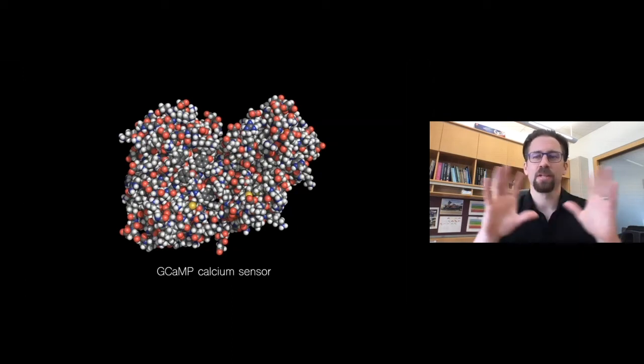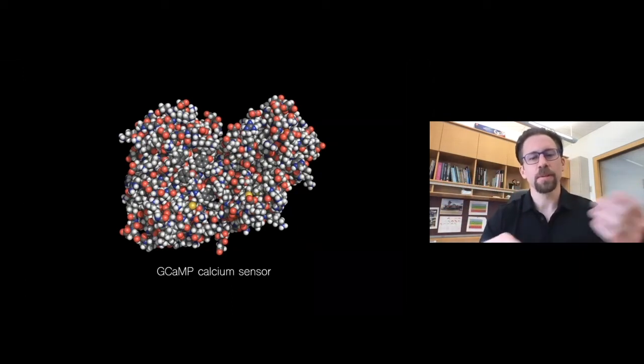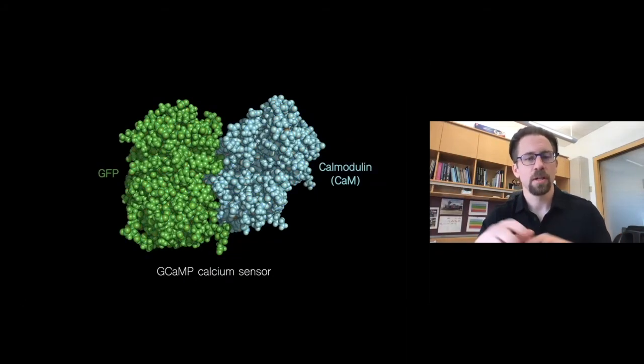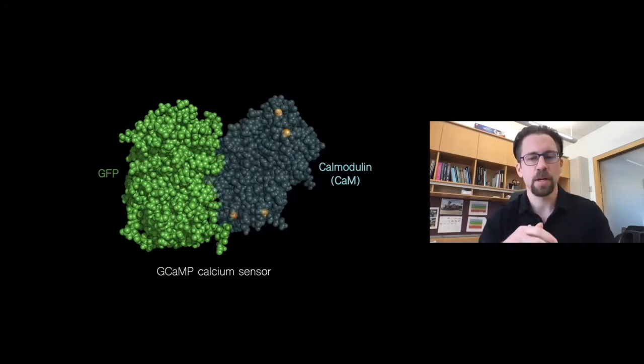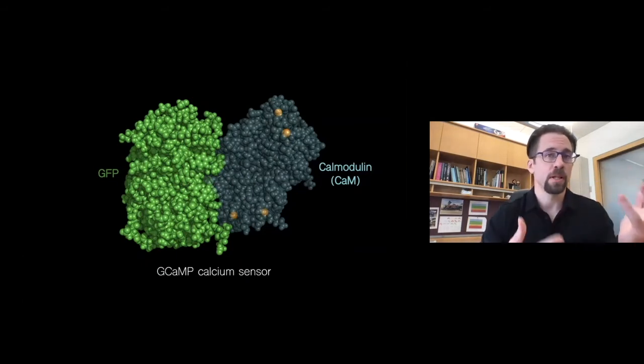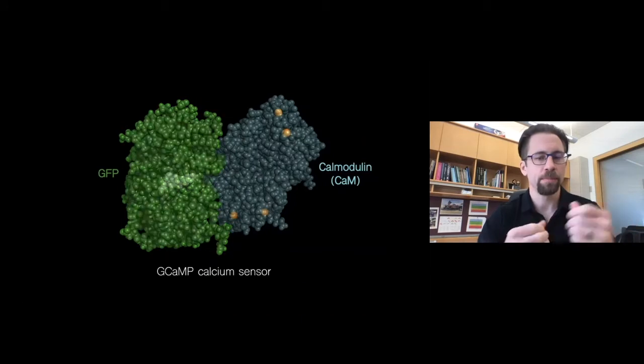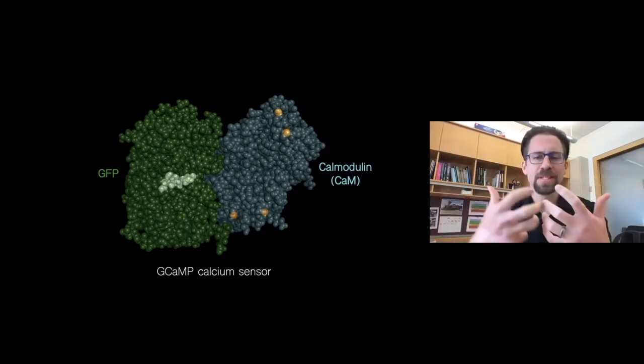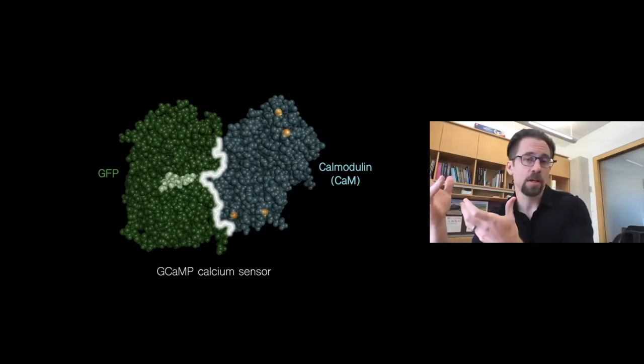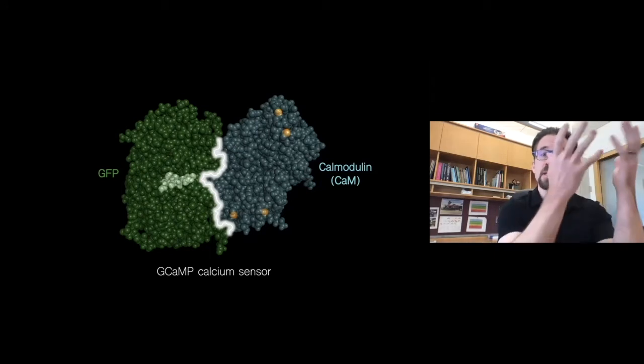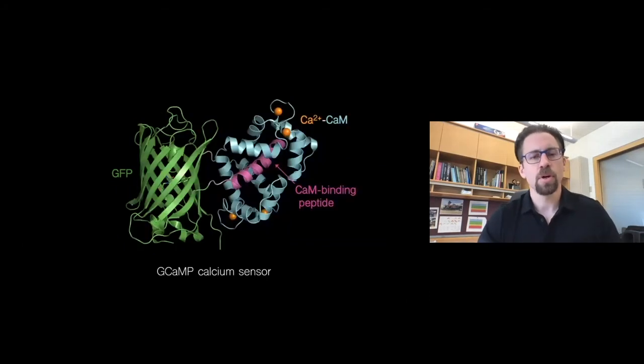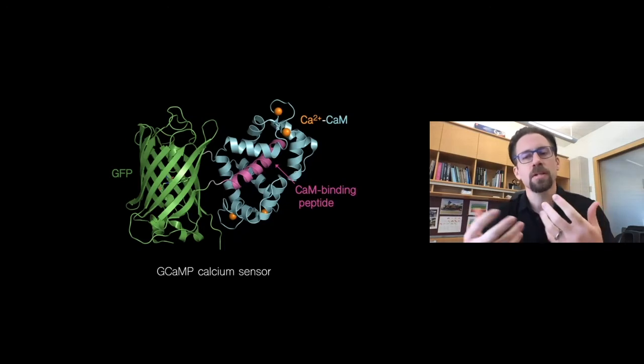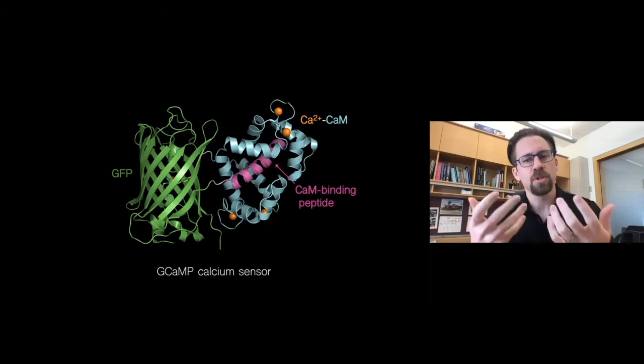This giant molecule that we saw a model of earlier is actually a structure of the GCaMP calcium sensor protein. It's really hard to understand what's going on when we just look at all of these atoms together like this. But if we color it differently, you can see it's comprised of a calcium sensor protein domain called calmodulin, which is in blue here, which is found actually in every single one of your cells. If we make it transparent, we can see these four orange calcium ions that are bound to calmodulin. And then on the left is the green fluorescent protein that you might have heard of from jellyfish, with its chromophore right in the middle. And that's the part that's responsible for fluorescence, where it absorbs blue light and then gives off green light. These two proteins have been stitched together into a single molecule such that the binding of calcium over here communicates through this interface with the amount of fluorescence light given off by the GFP over here.